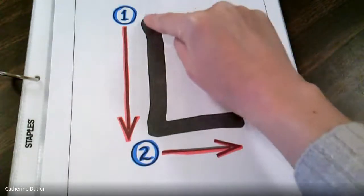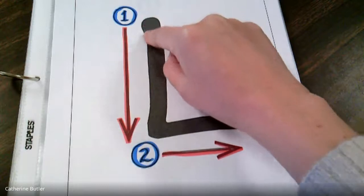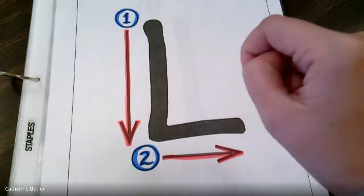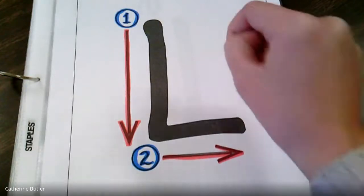First thing Miss Butler is going to do is put her finger up at the top. I'm going to do a line down and a little line out. L's are so easy. What do you guys think?